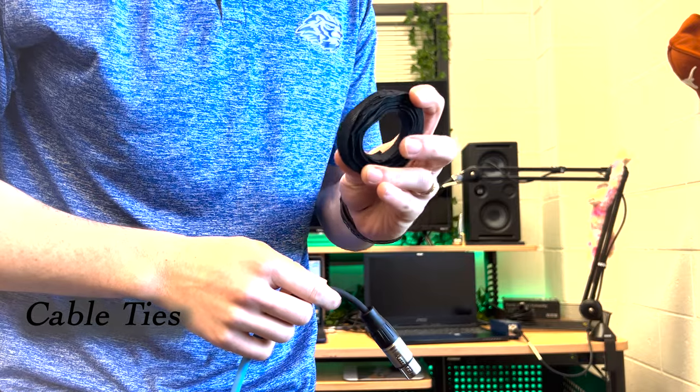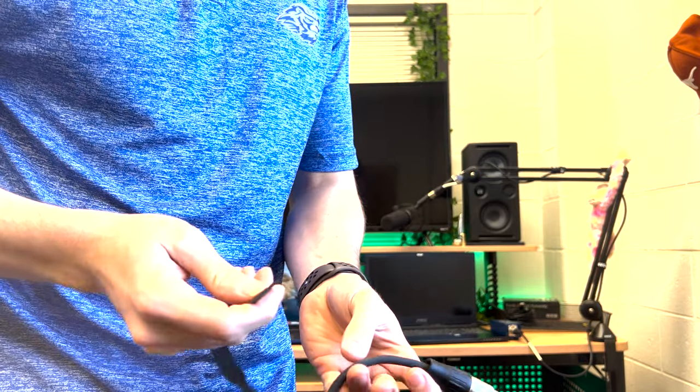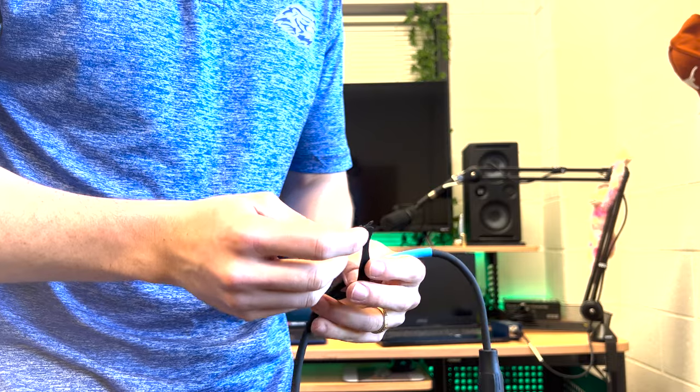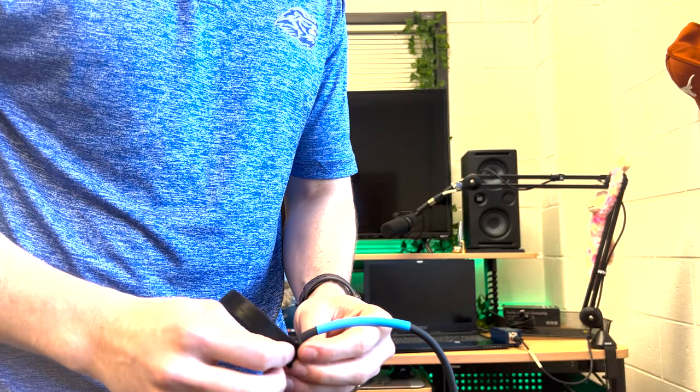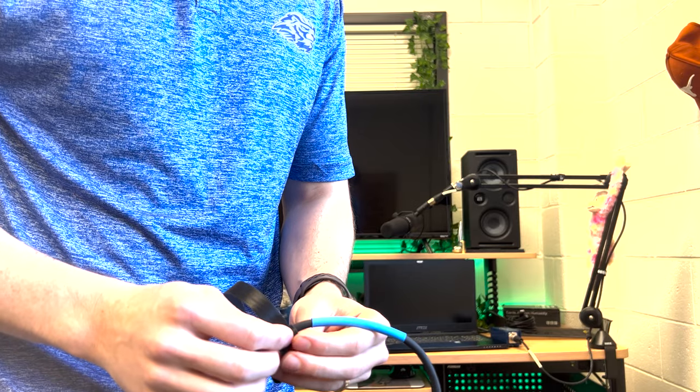If you do buy cable ties, they look like this. Take one off like this, wrap it around one end of the cable, like this. Loop it. Don't do it extremely tight so that you're still able to move this around.